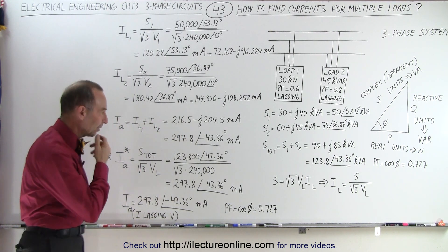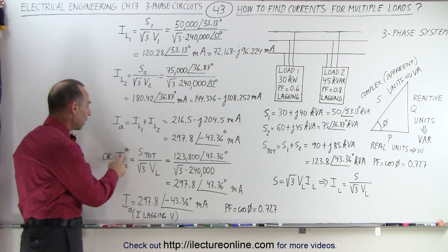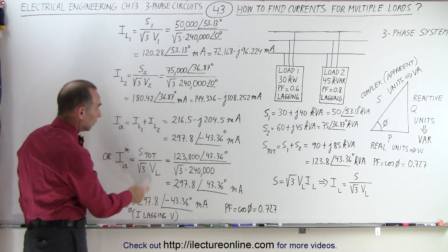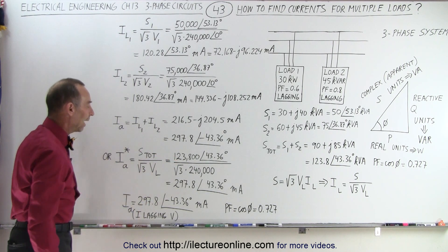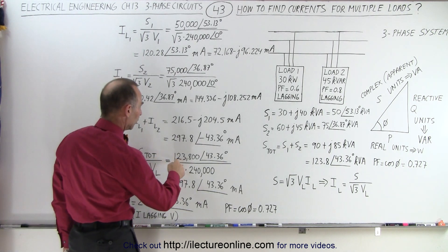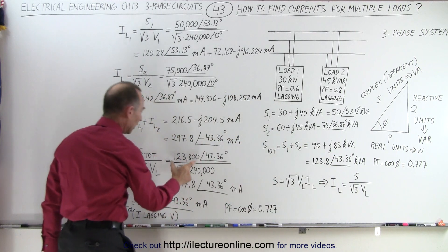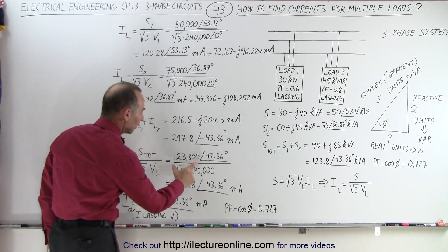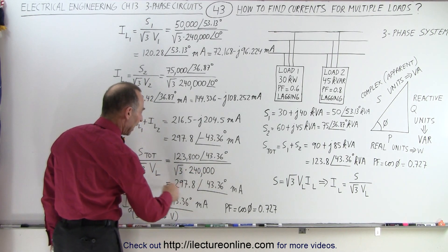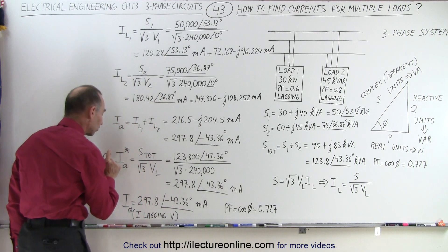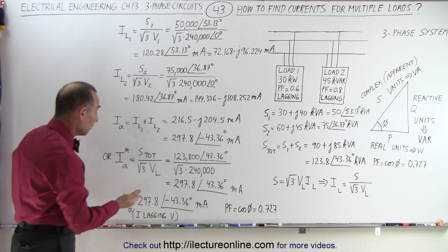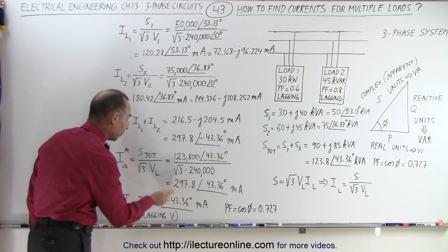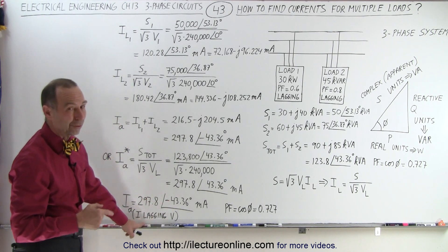There's another way we could have gotten the current. We can calculate the complex conjugate of the line current A, which equals the total complex power divided by the square root of three times the line voltage. When we take the total power — 123,800 VA at a phase angle of 43 degrees — and divide by the square root of three times the line voltage, we get the complex conjugate of the current. To find the actual current, we must take the complex conjugate of that result, which gives a negative phase angle, meaning the current is lagging the voltage.